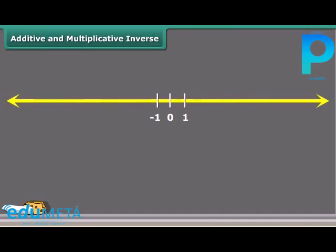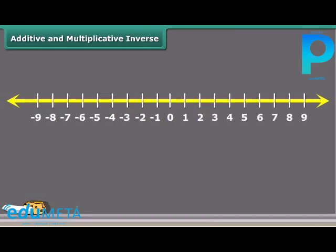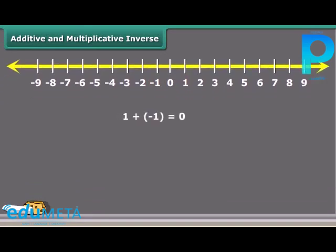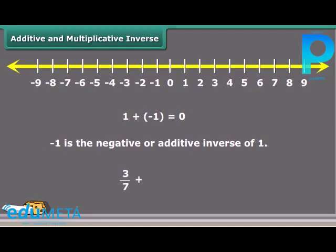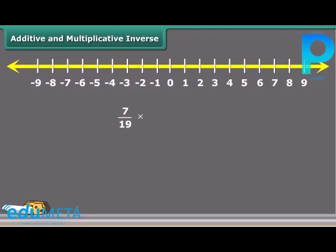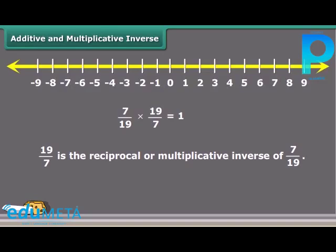You may have come across negative numbers while studying. Is minus 1 the negative of 1? Yes, it is because 1 plus minus 1 equals 0. So we say that minus 1 is the negative or additive inverse of 1. Likewise, for any rational number, say 3 by 7, minus 3 by 7 will be its additive inverse. Just think, by which rational number would we multiply 7 by 19 to get the product of 1? Obviously, it is 19 by 7. So we say that 19 by 7 is the reciprocal or multiplicative inverse of 7 by 19.